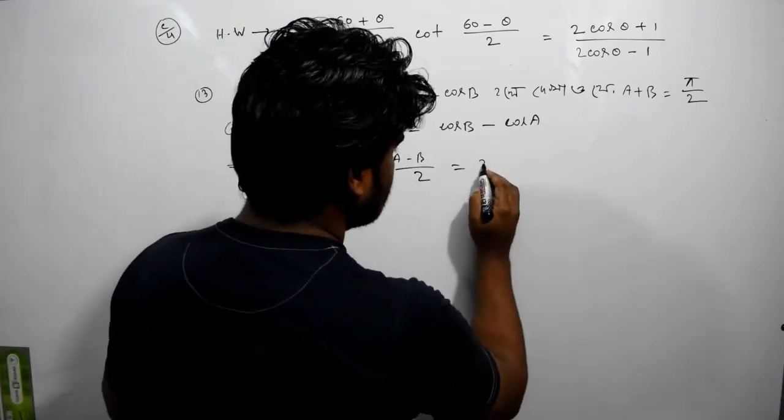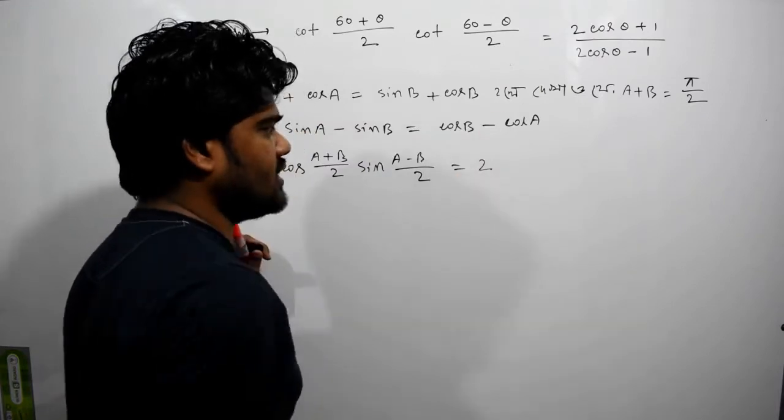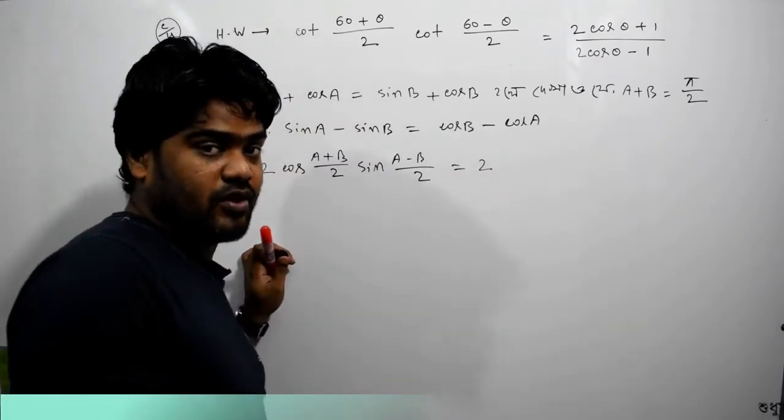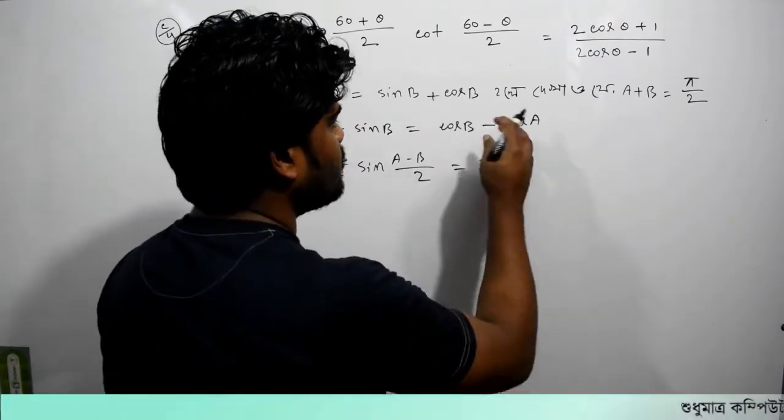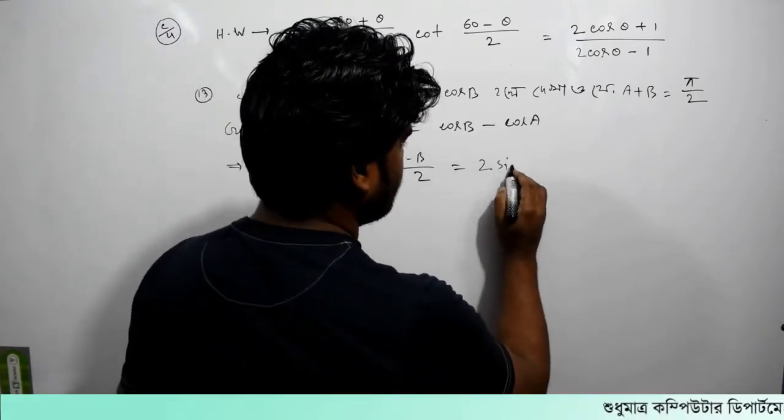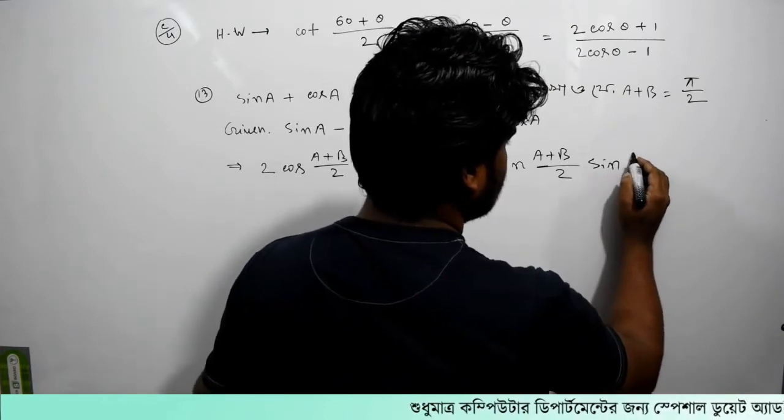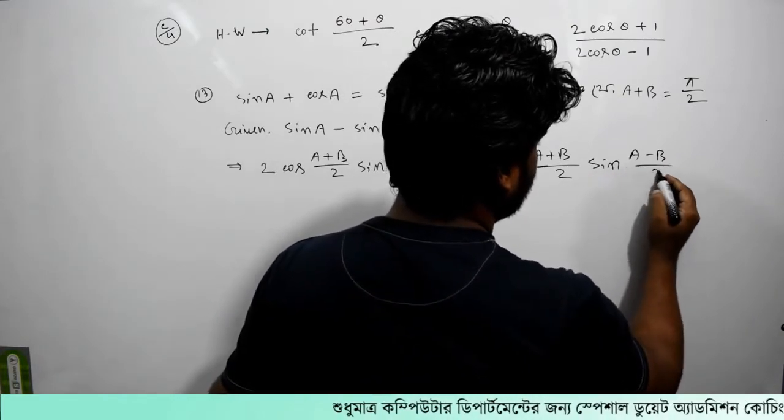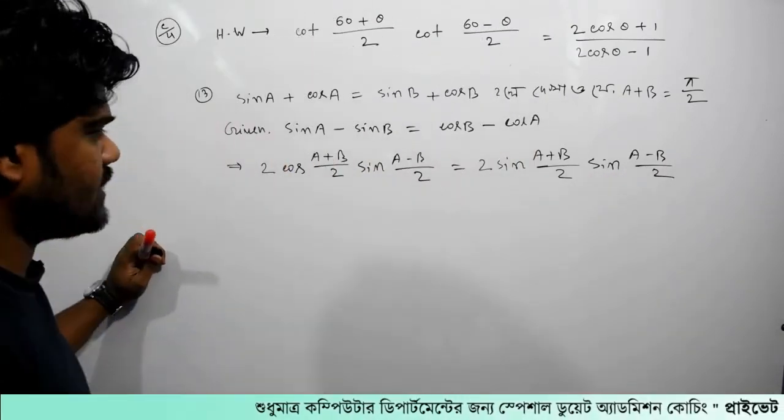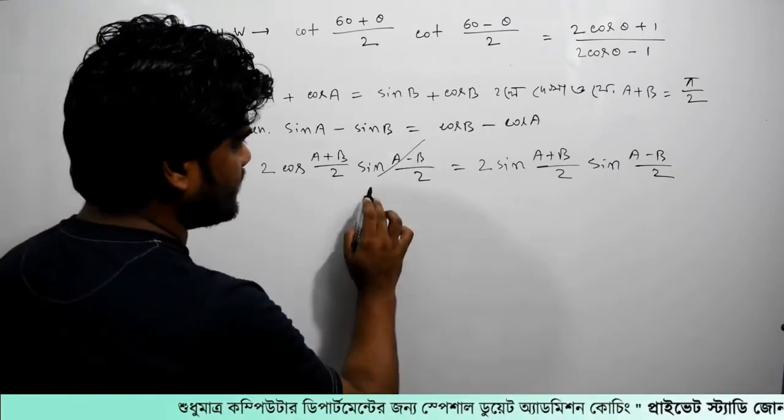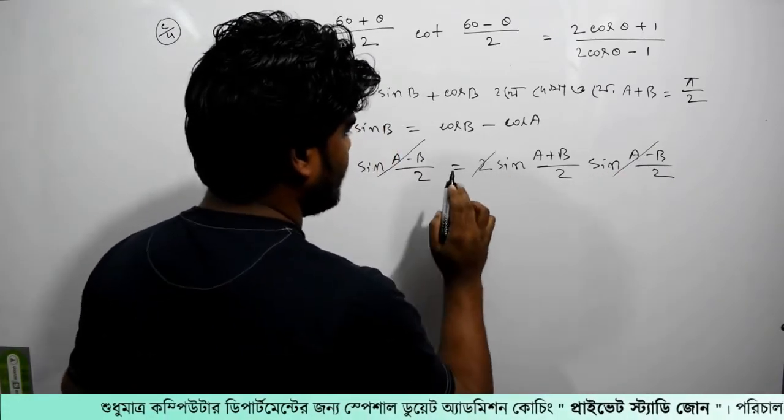So, 2 cos B minus cos A. So, if this is equal to 2 cos B by 2. So, sin(A minus B) by 2 is equal to sin(A minus B), sin(A minus B) by 2 is equal to 2.